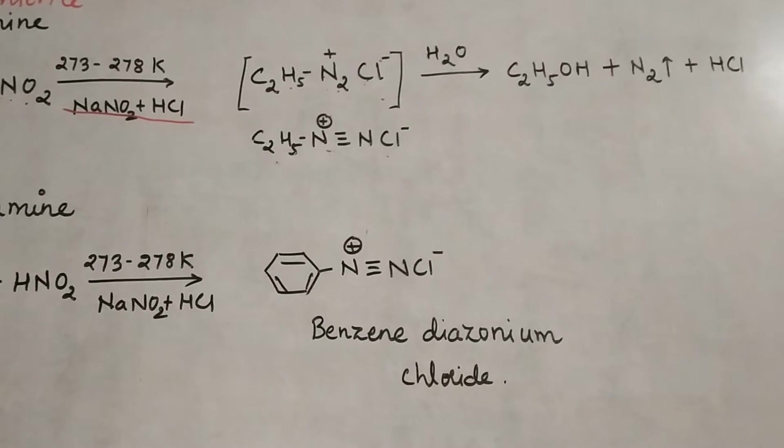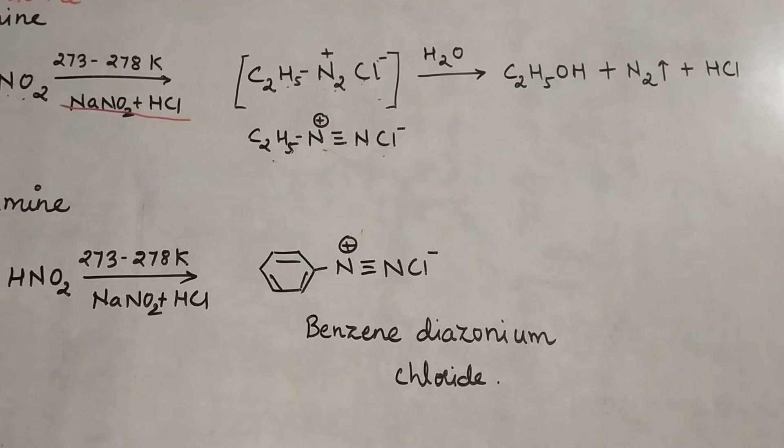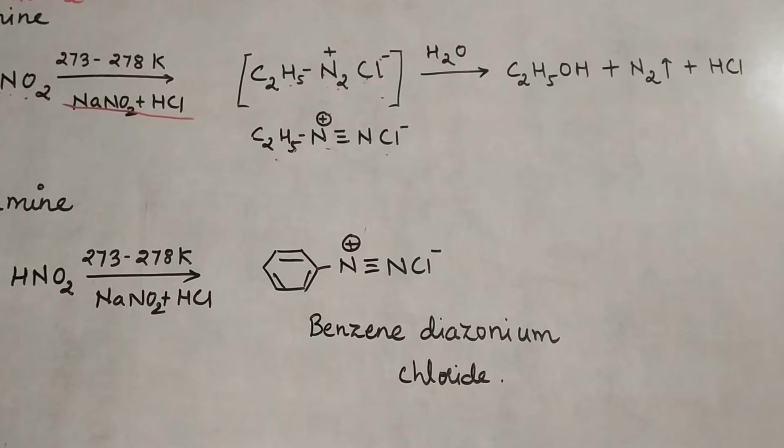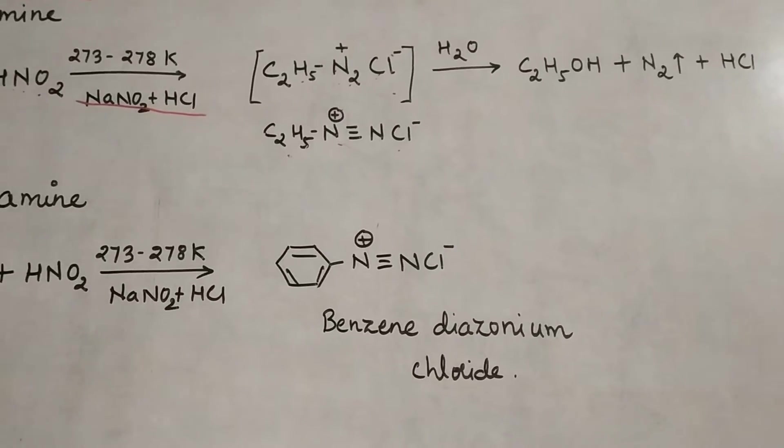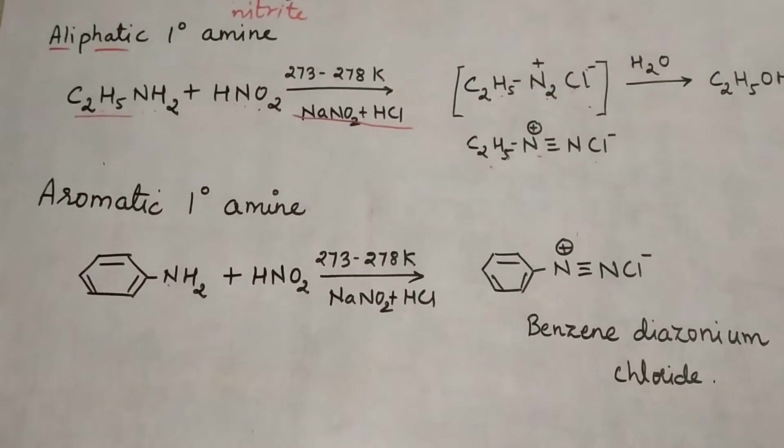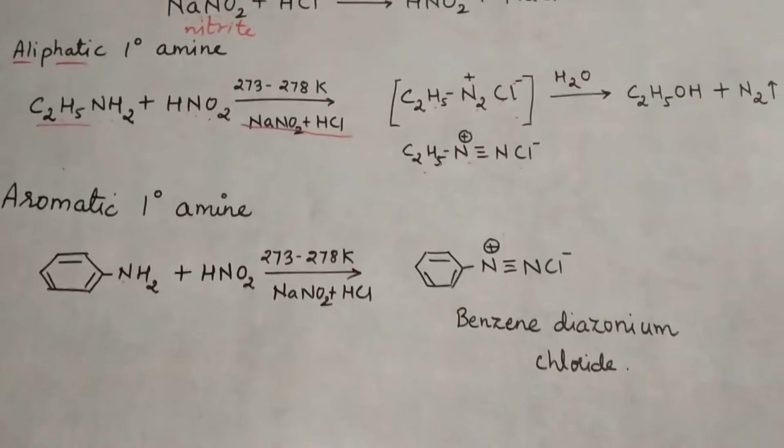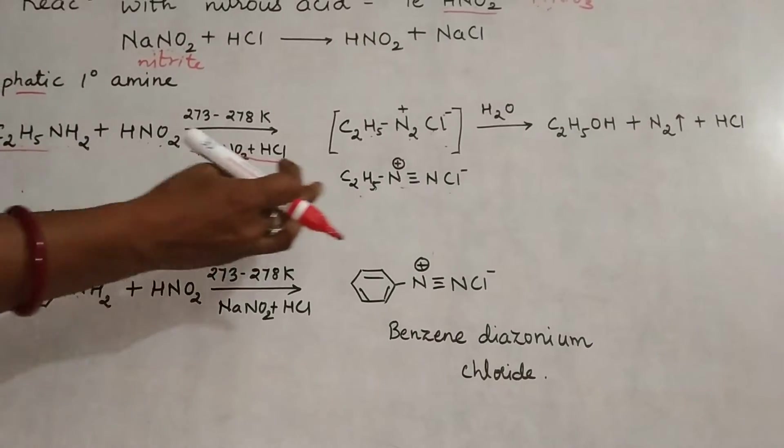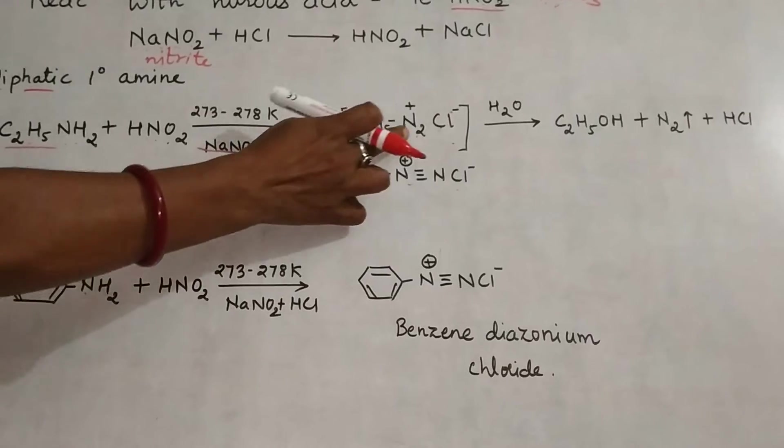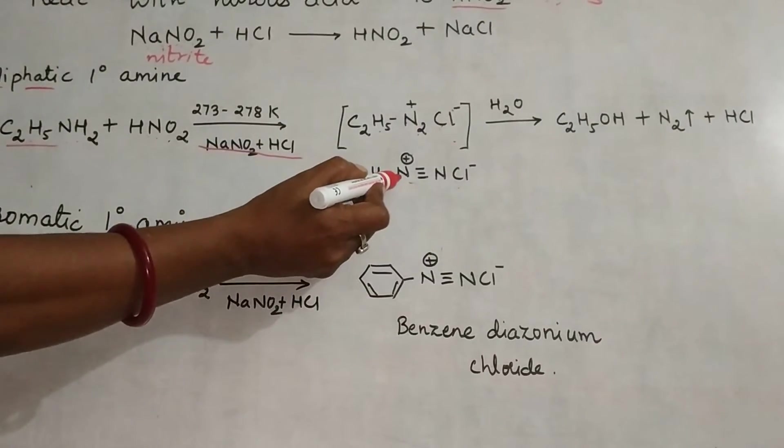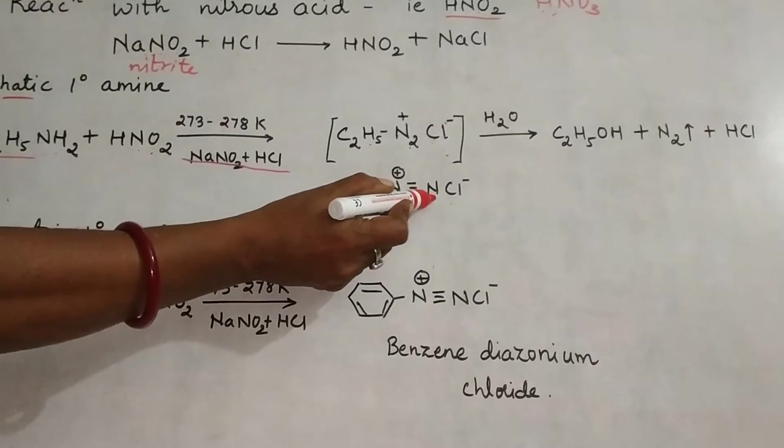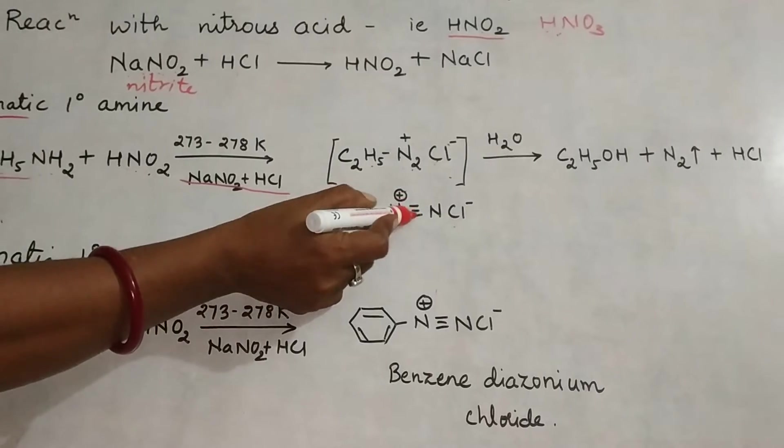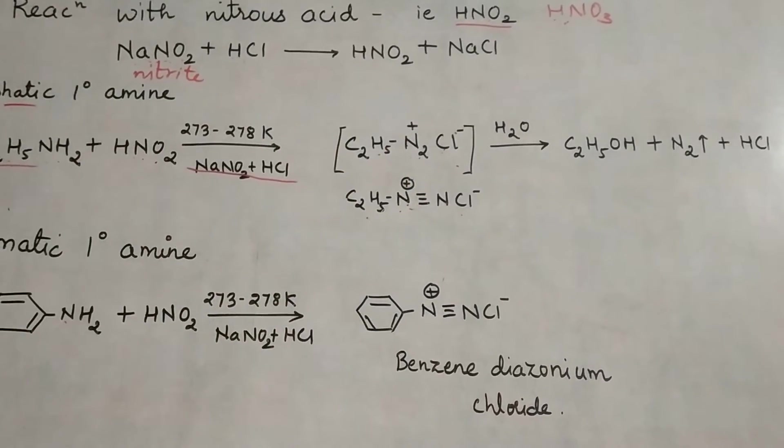An aliphatic primary amine forms an alcohol at the end—ethanol in this case. Whatever R group is used, you get the corresponding alcohol. The intermediate stage is ethane diazonium chloride: C2H5-N≡N+ Cl−. Since one nitrogen is bonded to four groups, it carries a positive charge.